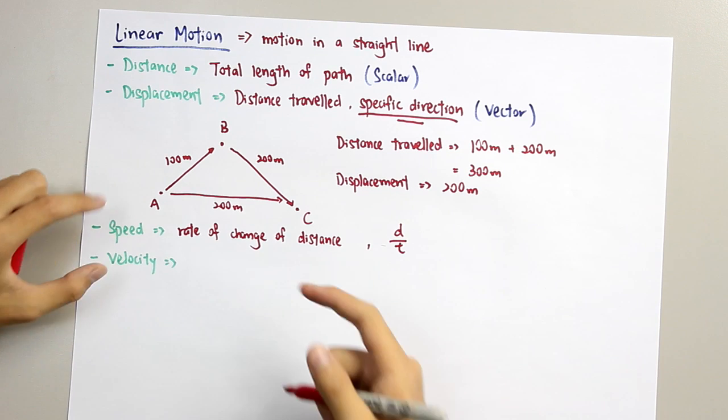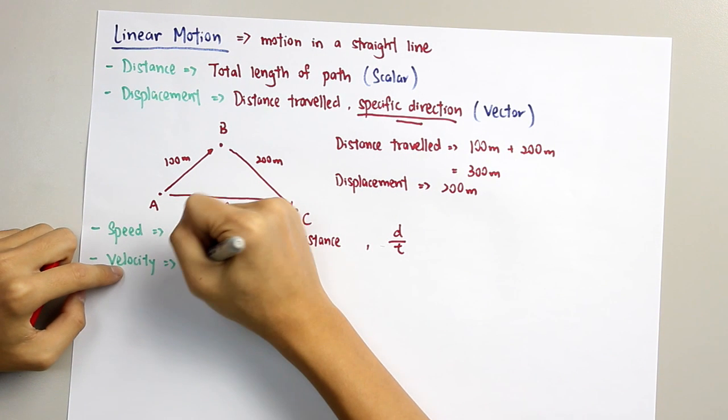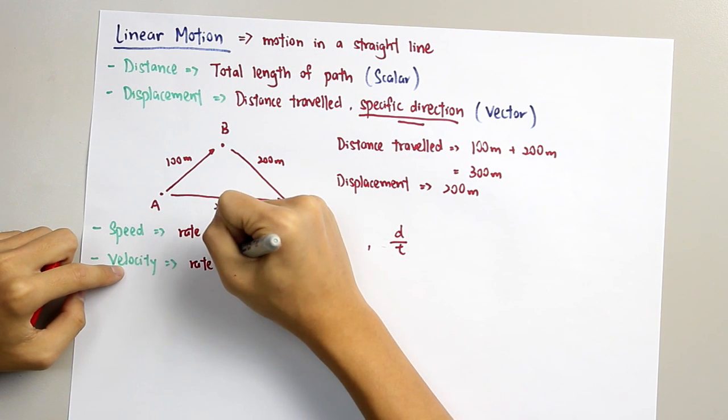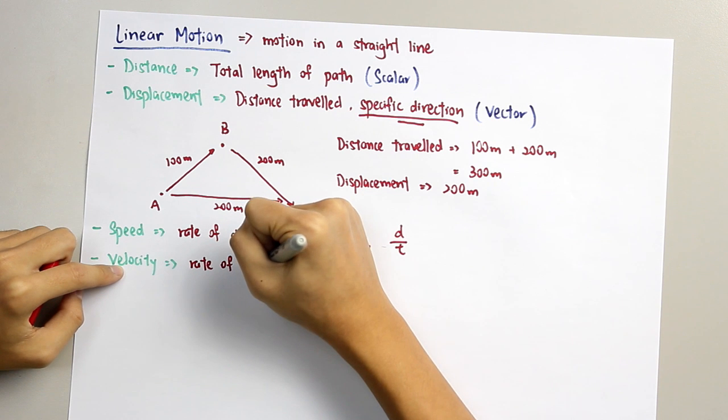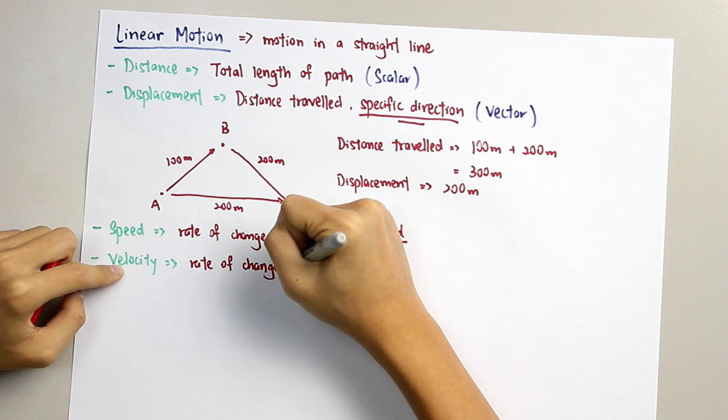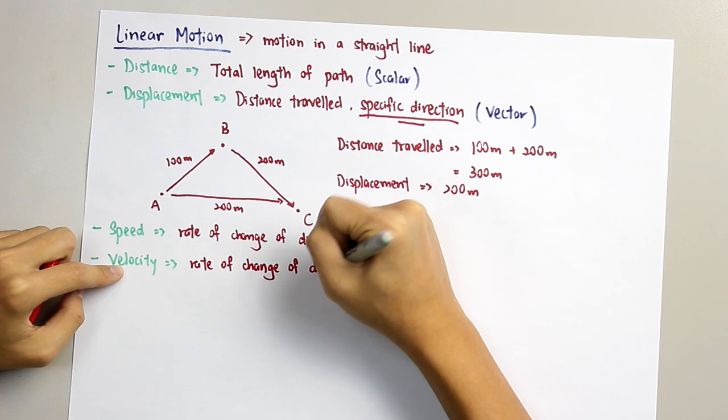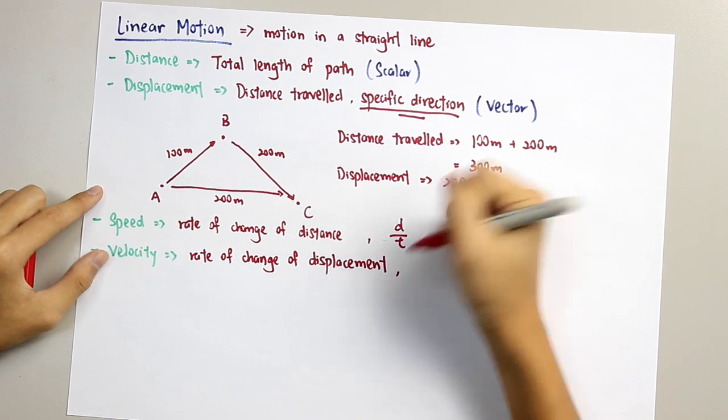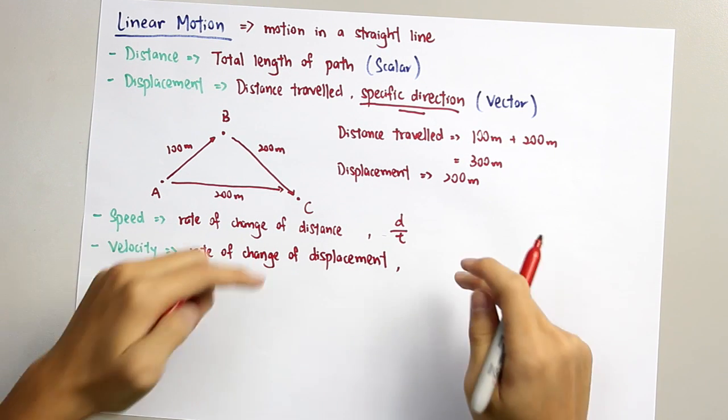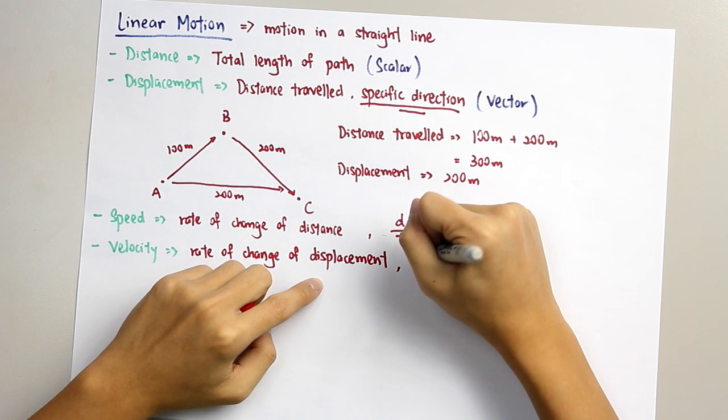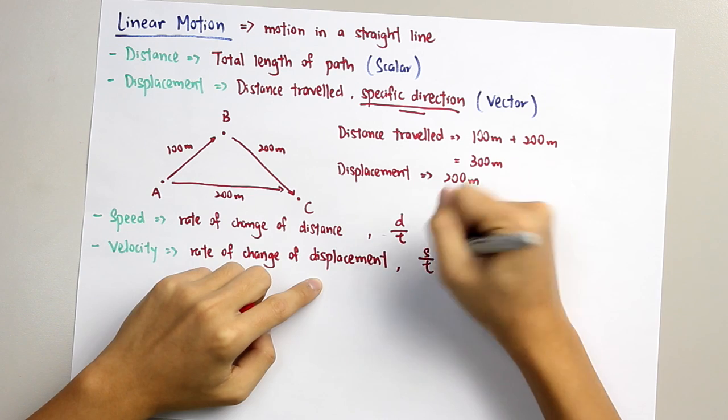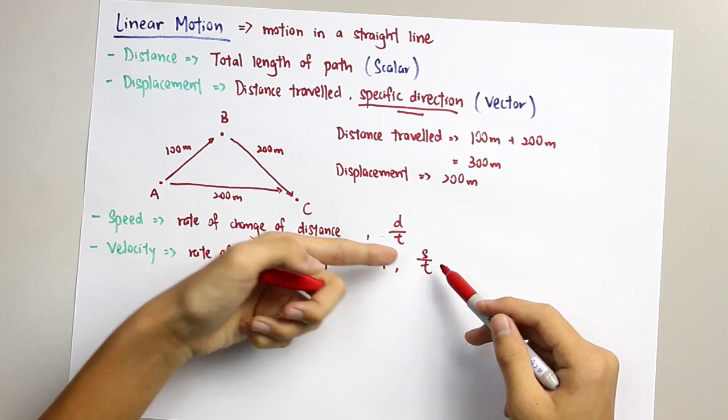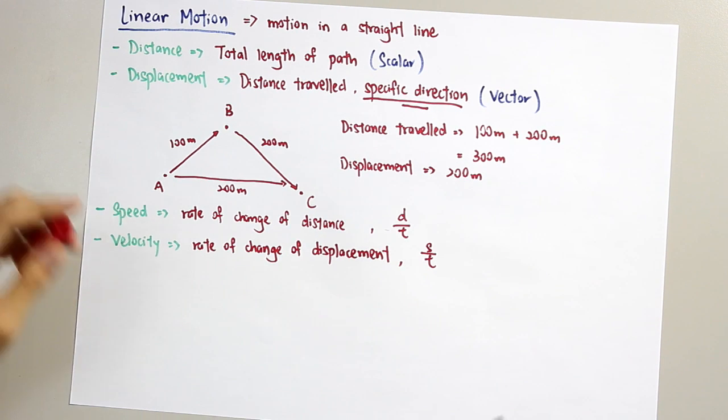Whereas, for velocity, it is the rate of change of displacement. And for the formula, it's the displacement represented by the letter S over the time.